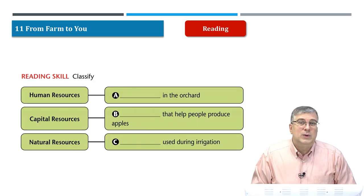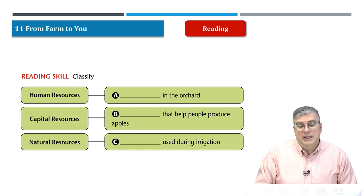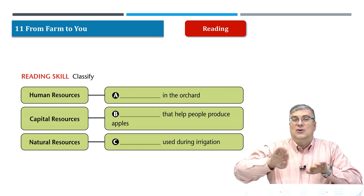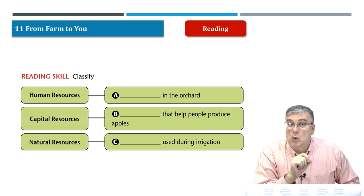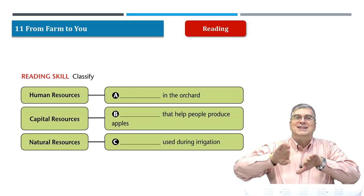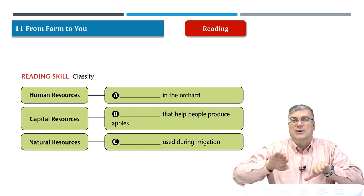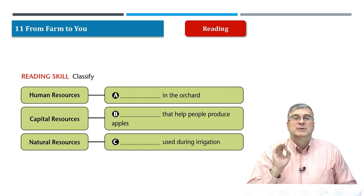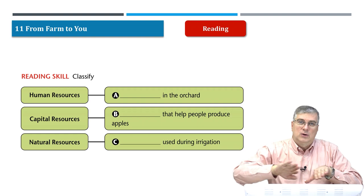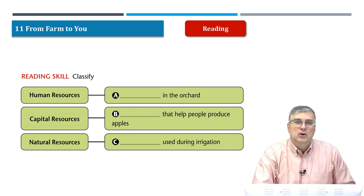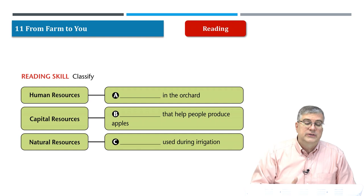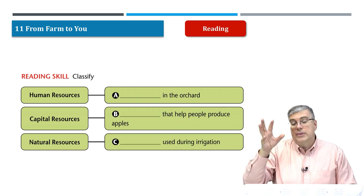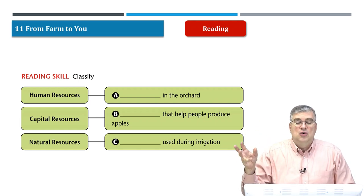Let's discuss how this reading passage was organized. The reading skill is to classify. Classify means to put things into different groups — kind of like sorting. We can classify resources into three groups: human resources, capital resources, and natural resources. On the right side we have examples of each one.